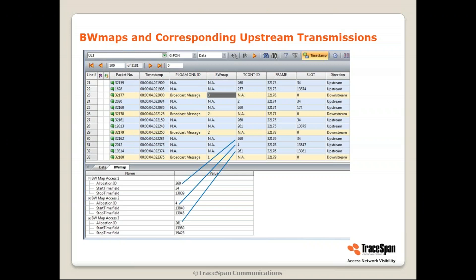Here's an example using TracePad's GPON Analyzer — GPON Expert — showing what BWMAP allocations look like alongside the corresponding upstream transmissions. You can see a frame with three BWMAPs: allocation ID 260 with start time 34 and end time 1389, allocation ID 4, and allocation ID 261. The corresponding upstream transmissions for these TCONTs are visible — the downstream carries assignments and the upstreams from different TCONTs arrive in their assigned time slots.